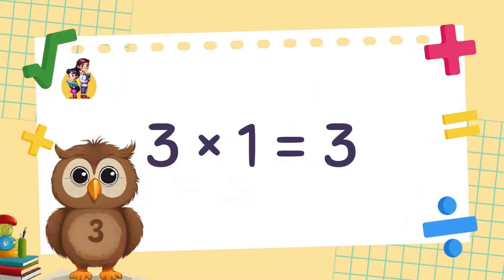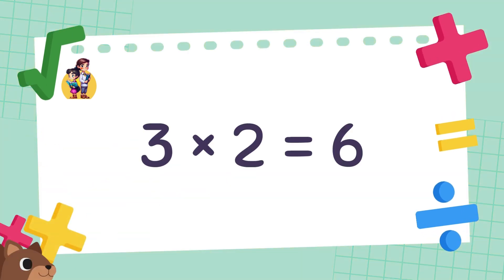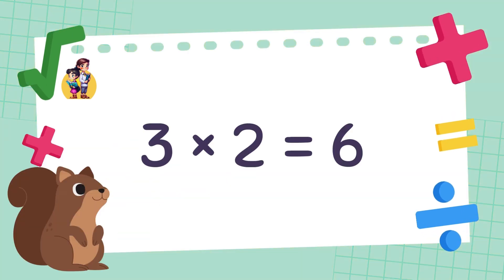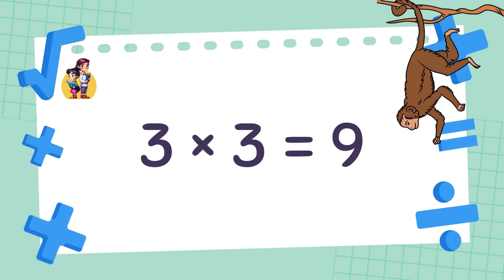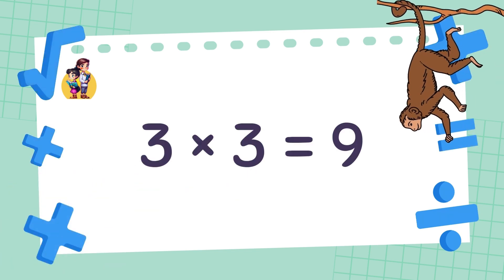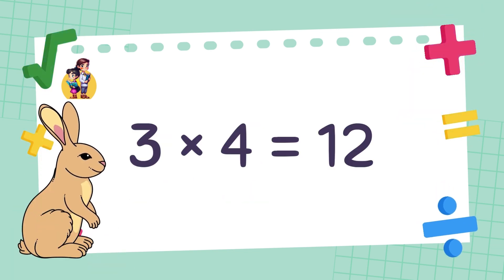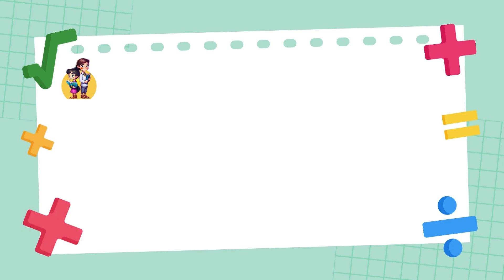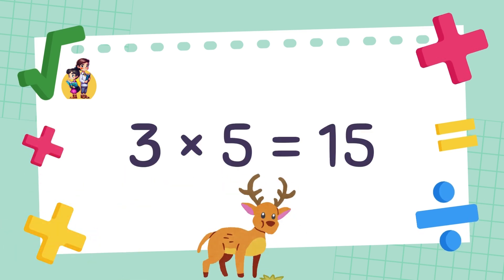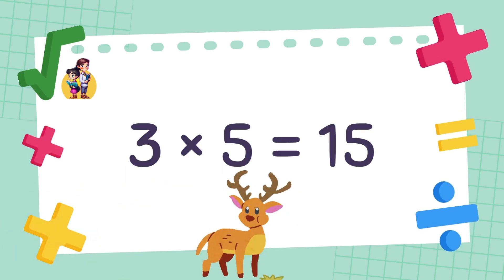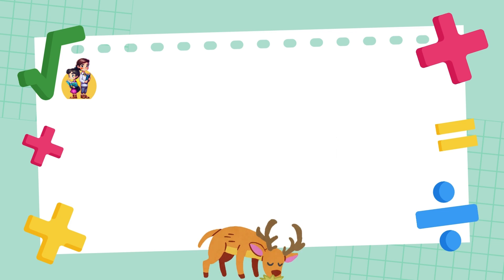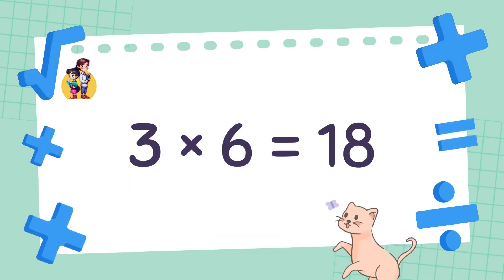3 times 1 is equal to 3. 3 times 2 is equal to 6. 3 times 3 is equal to 9. 3 times 4 is equal to 12. 3 times 5 is equal to 15. 3 times 6 is equal to 18.